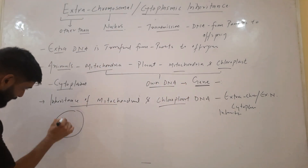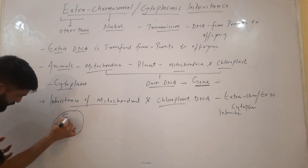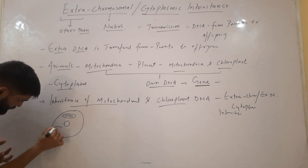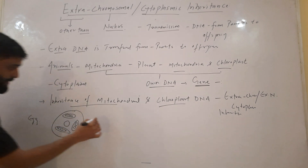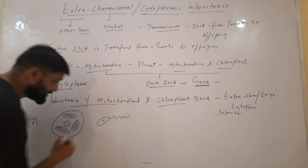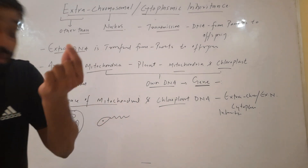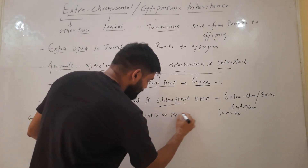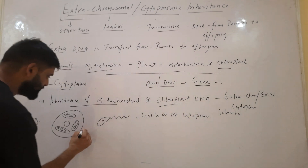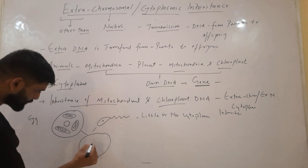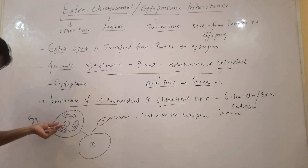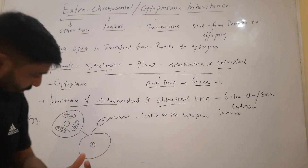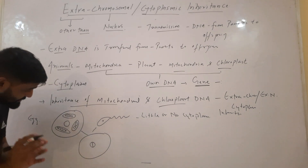In the case of humans, we know that the egg is a larger cell and it contains cytoplasm, and in the cytoplasm we know that mitochondria are present. The human sperm, however, is a very small cell — it contains little or no cytoplasm. When the egg and sperm fuse, a zygote is formed. In the nucleus of this zygote, half of the chromosomes are transmitted by the egg — they come from the mother — and half are transmitted by the sperm, which comes from the father.